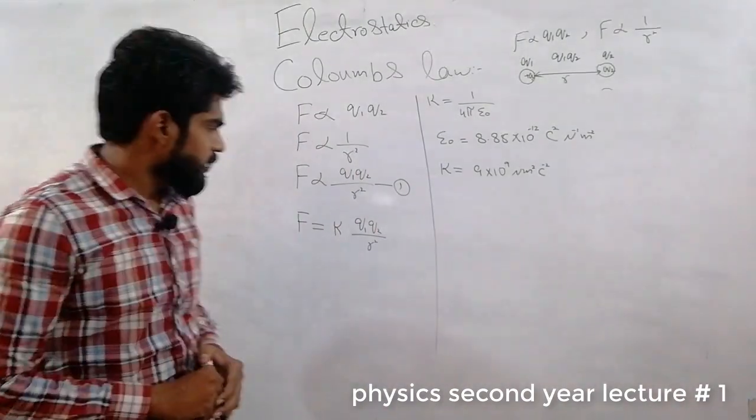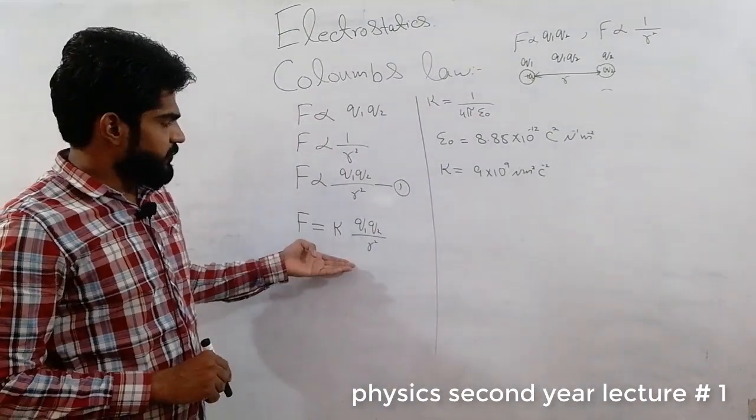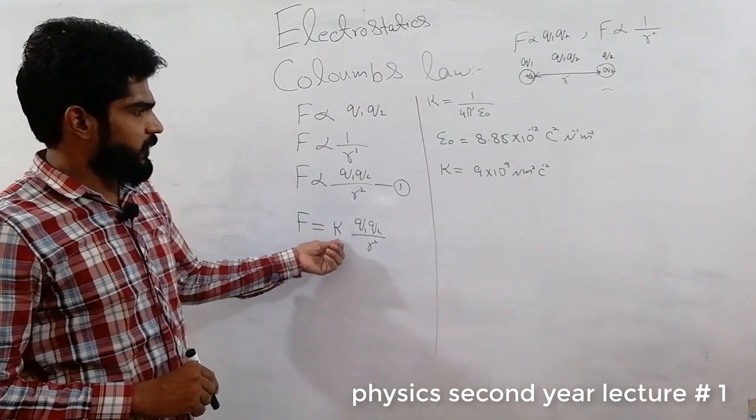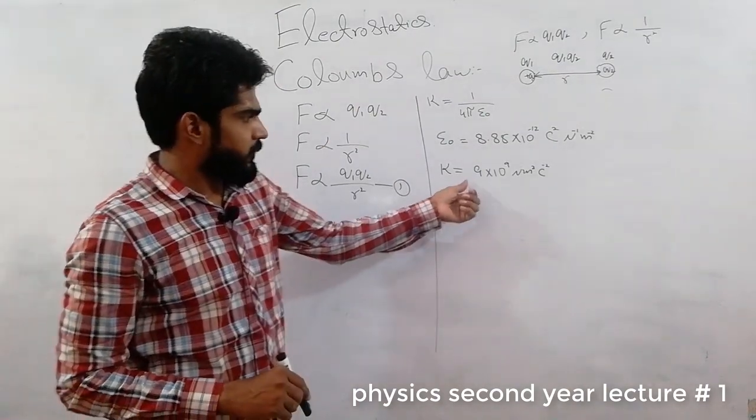Putting this value into our equation gives us the final result: k = 9 × 10⁹ newton meter square per coulomb square. This is the value of the proportionality constant k.